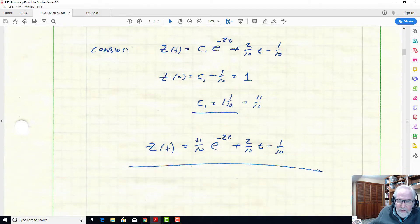And we combine all those back together and we have the total solution of the differential equation: 11/10*e to the minus 2t plus 2/10*t minus 1/10. And that is the answer.